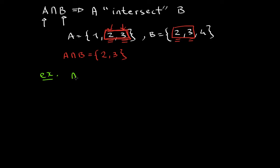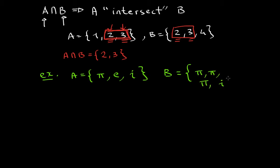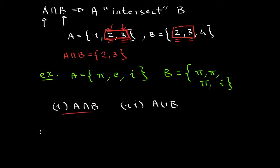Here is an example. You could have A = {π, E, I}, and set B = {π, π, π, I}. They ask you two questions: first, what is A intersect B? And second, what is A union B? Let's work through this. The answer for intersect is right here.